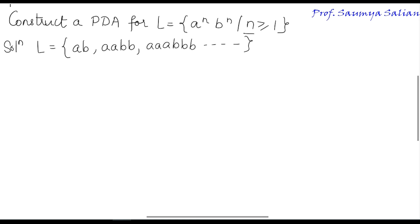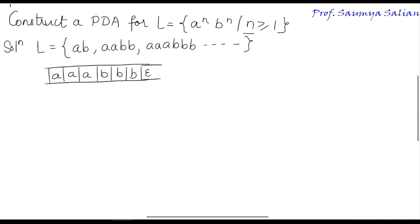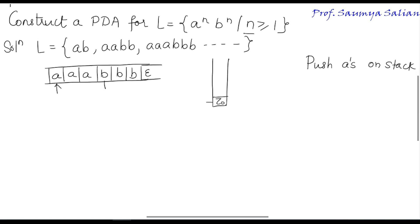In a PDA we have an input tape. Consider a valid string 'a a a b b b' with epsilon at the end indicating the end of the string. We have a read header which always moves to the right. We have a stack where Z0 is the initial bottom-of-stack symbol. The logic is: push all A's onto the stack, and the moment I see a B, pop A's from the stack.